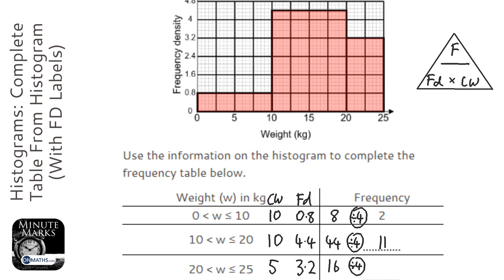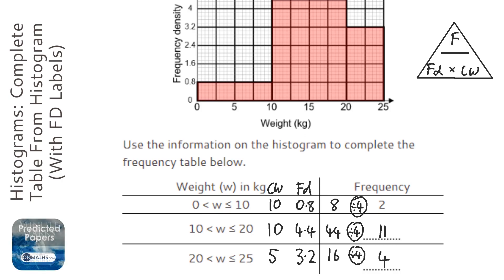Just be careful - most histograms, this number here is 1, so when you times the class width and frequency density together, you always get the frequency. But it doesn't have to be that way.